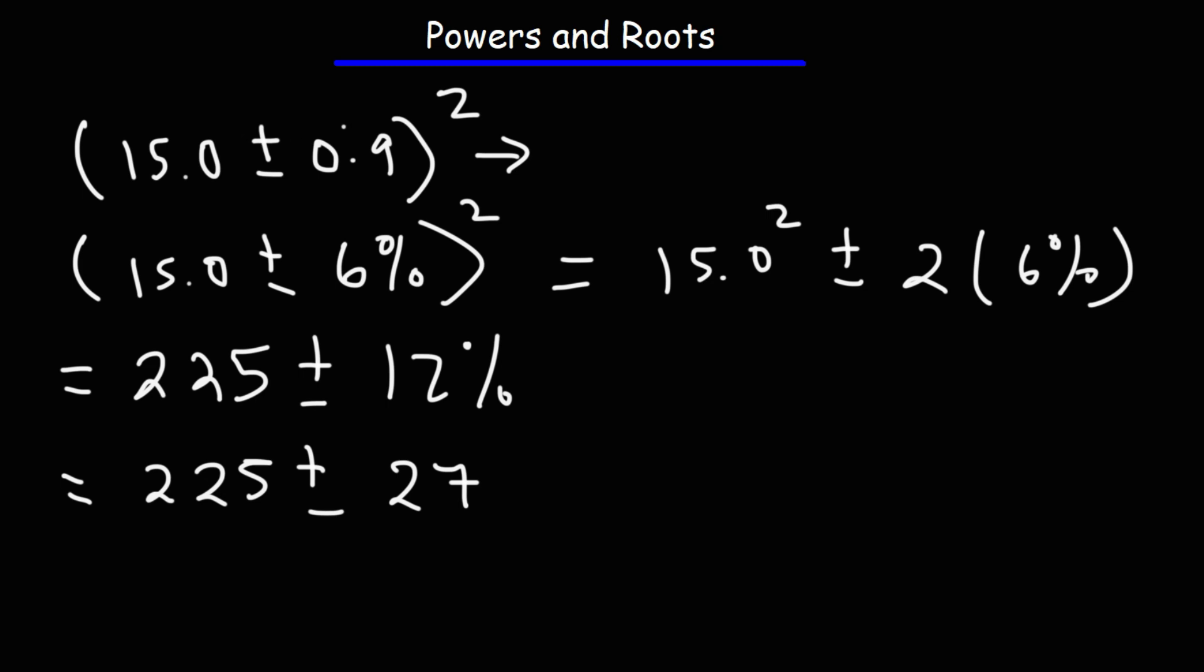So what I'm going to do here is I'm going to get the entire range for that value. So 15 minus 0.9 is 14.1. And then 15 plus 0.9 will give us 15.9. So this value is somewhere between 14.1 and 15.9. Let me use brackets instead of parentheses. Now I'm going to square both numbers. 14.1, if we square it, that's going to be 198.81. And 15.9 squared is 252.81.